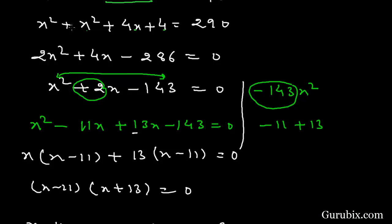If we add x squared plus x squared then we get 2x squared, here is 4x, and if we take this 290 on the left hand side then it becomes negative. And if we subtract positive 4 from negative 290 then we have negative 286.